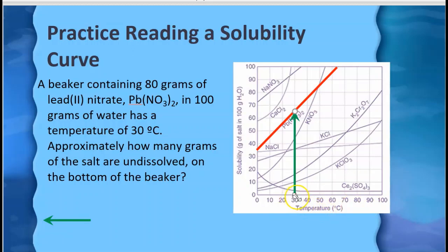So if I do that, I can go from 30 up to the line and then I can go from the line over to the x-axis to find the amount of lead nitrate. So it looks like the saturated solution of lead nitrate contains 65 grams. So I can say here a saturated solution would contain 65 grams.